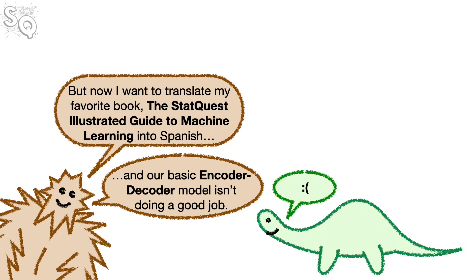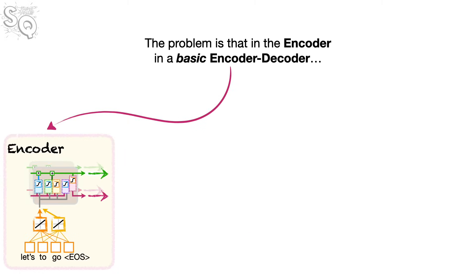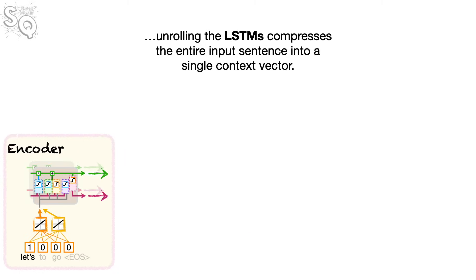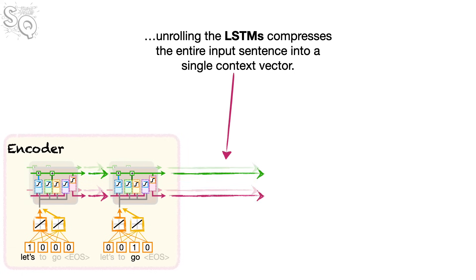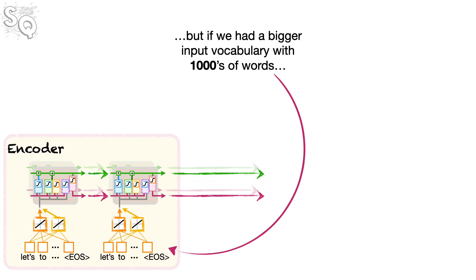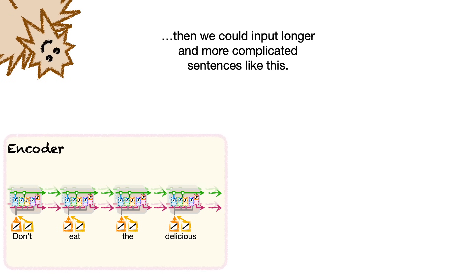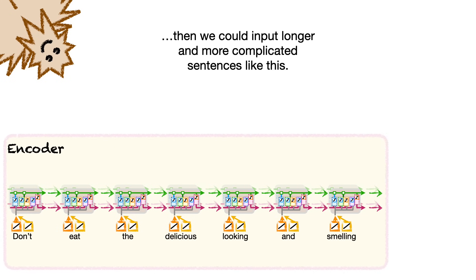And our basic encoder-decoder model isn't doing a good job. I'm sorry you're having trouble with translating, Squatch. The problem is that in the encoder in a basic encoder-decoder, unrolling the LSTMs compresses the entire input sentence into a single context vector. This works fine for short phrases like Let's Go. But if we had a bigger input vocabulary with thousands of words, then we could input longer and more complicated sentences like this.